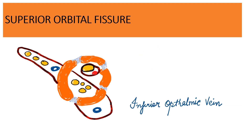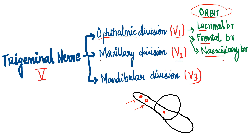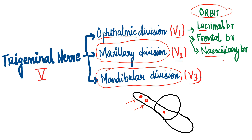The inferior compartment of the superior orbital fissure is simple to remember: only the inferior ophthalmic vein passes through it. To summarize the trigeminal nerve: V1 (ophthalmic) has three branches — the lacrimal, frontal, and nasociliary — all passing through the orbit. The lacrimal and frontal branches pass through the superior compartment; the nasociliary passes through the middle compartment. The maxillary division (V2) and mandibular division (V3) do not pass through the orbit.